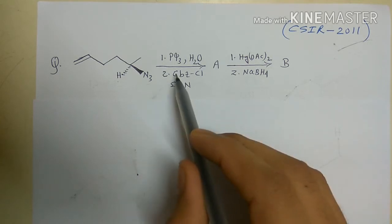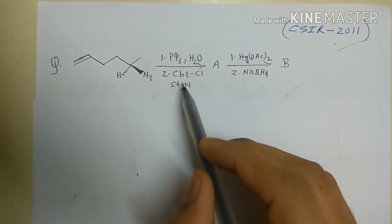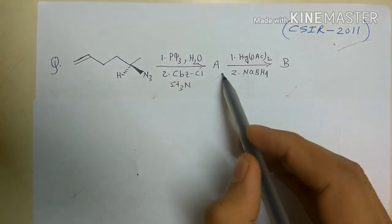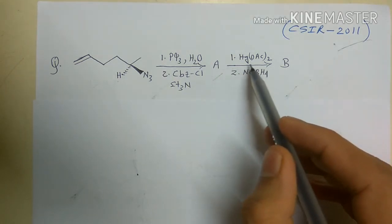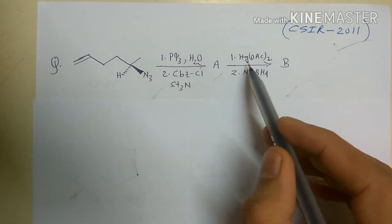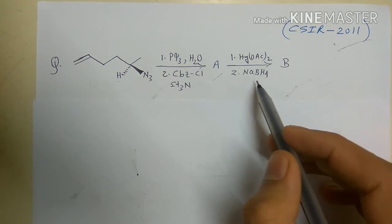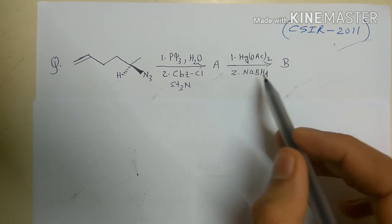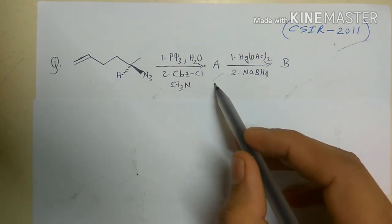The azide compound is treated with triphenylphosphine, water, and then CBZ chloride to form compound A. Compound A is then treated with mercuric diacetate followed by sodium borohydride reduction — this is oxymercuration-demercuration reduction — to give compound B. We have to identify compounds A and B.